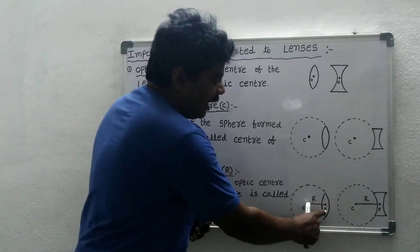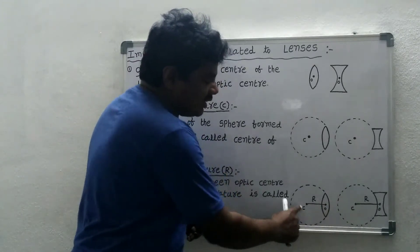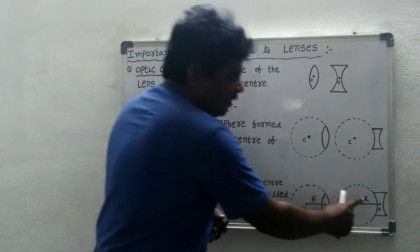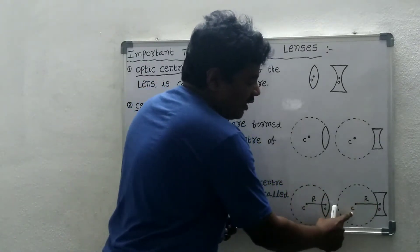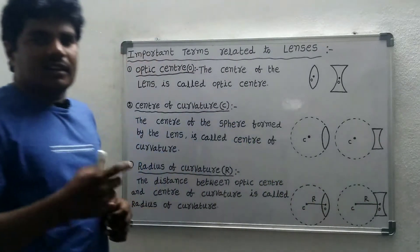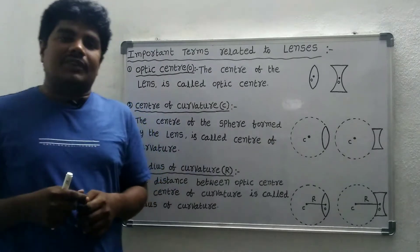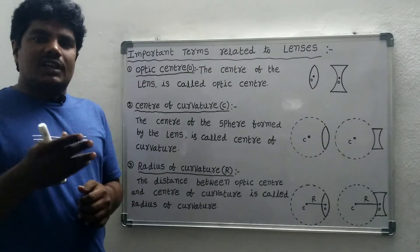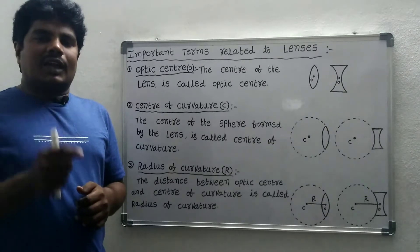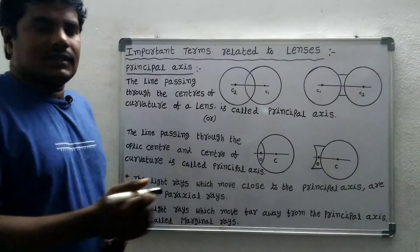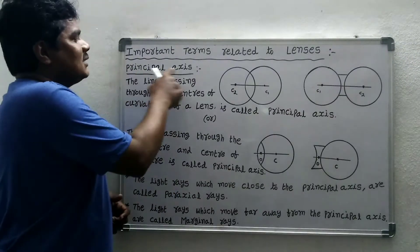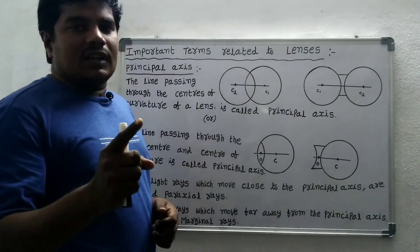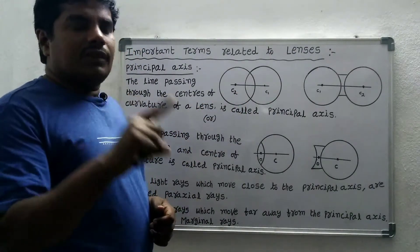Number three: radius of curvature. The distance between the optic center and the center of curvature is called the radius of curvature. It is represented by capital R.